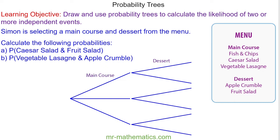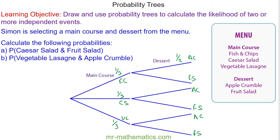Simon is selecting a main course and a dessert from a menu. We can assume it is equally likely he will choose any main course and any dessert, and that the outcome of a dessert is independent from that of a main course. On the main course you can have fish and chips, a Caesar salad, or vegetable lasagna — each with a probability of one third. For dessert you can have an apple crumble or a fruit salad, and the dessert choice is independent of the main course, each with a probability of one half.